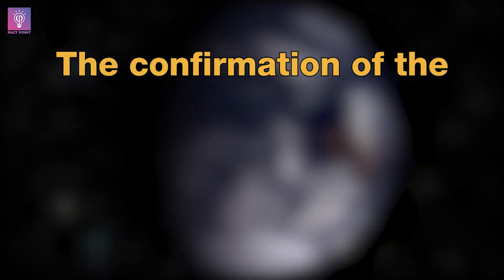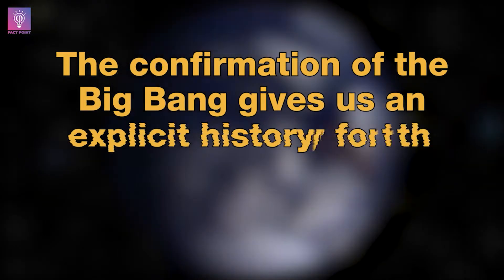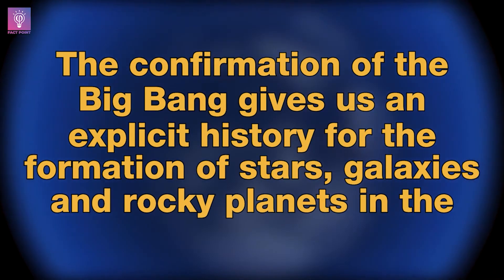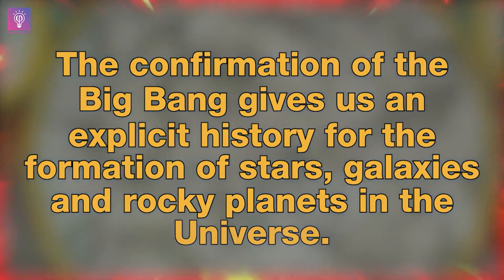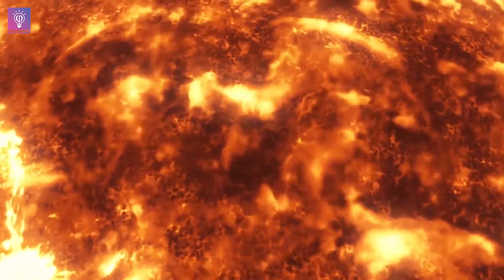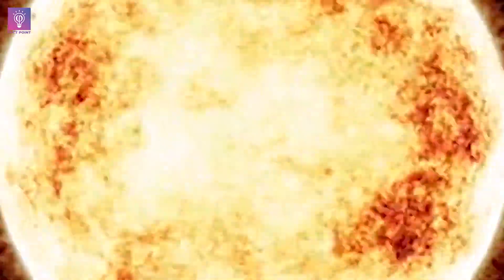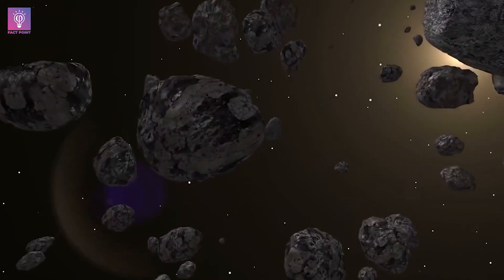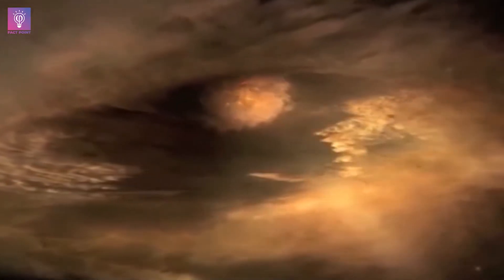Fact number 7. The confirmation of the Big Bang gives us an explicit history for the formation of stars, galaxies, and rocky planets in the universe. If the universe started off hot, dense, expanding, and uniform, then not only would it cool and form atomic nuclei and neutral atoms, but it would take time for gravitation to pull objects together into gravitationally collapsed structures.